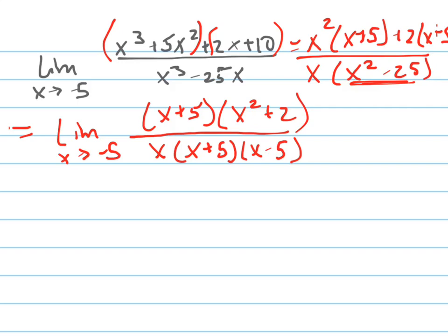I can cancel out the x plus 5 and x plus 5, which means now I can plug in. If you're trying to graph this, that basically means that's a hole in the graph. There's a hole at negative 5, but now I can plug in.